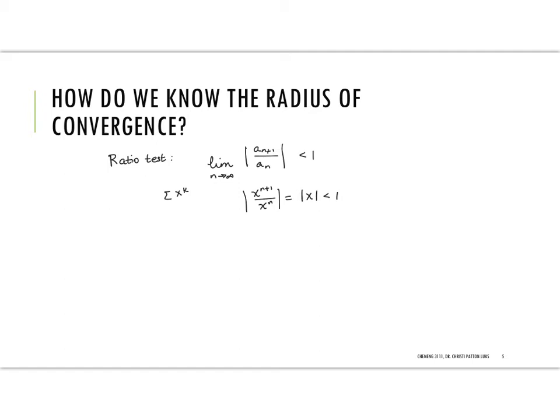The other version of this test is the root test. And the root test, what you're doing is you're taking the nth root of the a sub nth term, and again looking for that to be less than 1. So again for the same function x to the k power, we're going to put in an n, so x to the n. We're going to take the nth root of x to the n, and that's going to be the absolute value of x. And again we need that less than 1. So again we get that radius of convergence is 1.